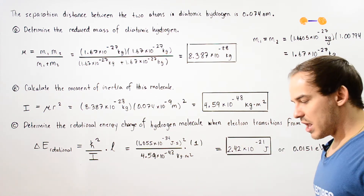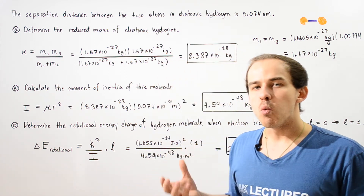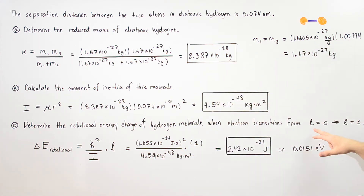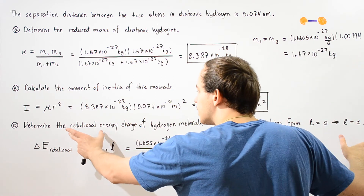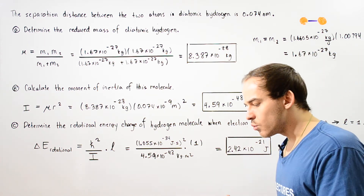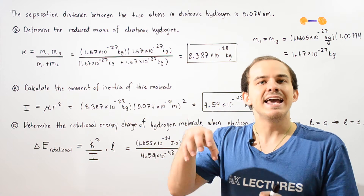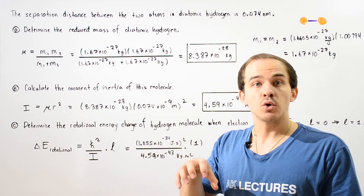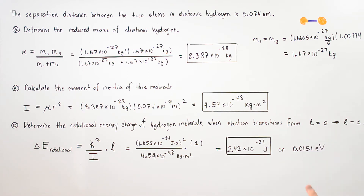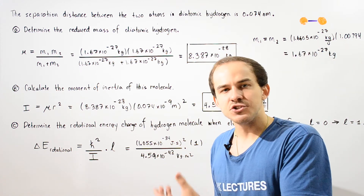In part C, we want to calculate the change in energy as a result of rotation when the electron transitions from L equals zero ground state to L equals one excited state. As our molecule rotates, it gains a certain rotational energy, and as a result of this increase in energy an electron can transition from L equals zero to L equals one. We want to calculate what this change in rotational energy is.